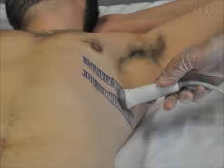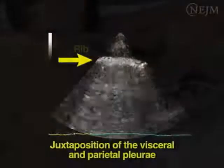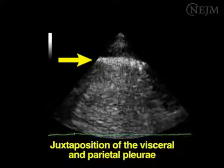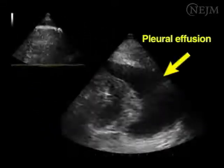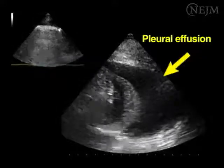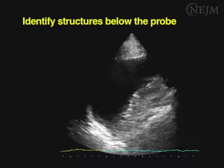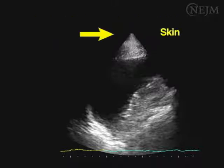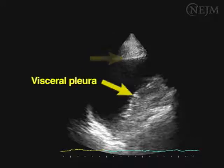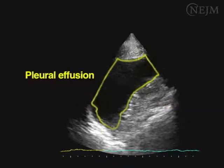Position the ultrasound probe in parallel to the intercostal space, holding it firmly and perpendicular to the chest wall to obtain the best acoustic window. Normally, the visceral and parietal pleura are juxtaposed and moving with the respiratory cycle. In contrast, the pleural effusion is shown as an anechoic space between the two pleura. The optimal acoustic window should provide clear visualization of the entire ultrasound field, identifying structures from surface to depth: the skin, muscles, parietal pleura, visceral pleura, and lung parenchyma.